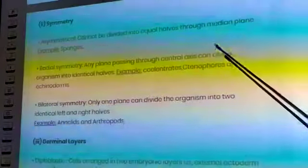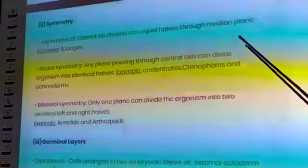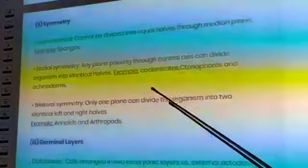Asymmetrical cannot be divided into equal halves through median plane. Example: sponges.